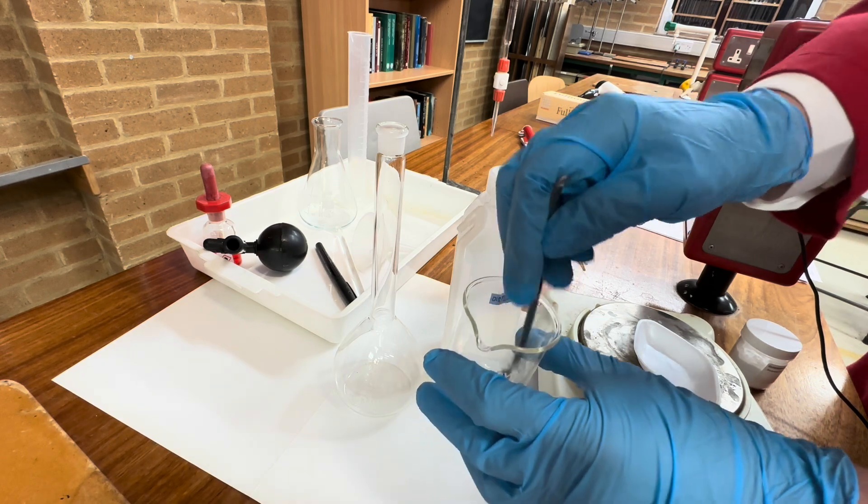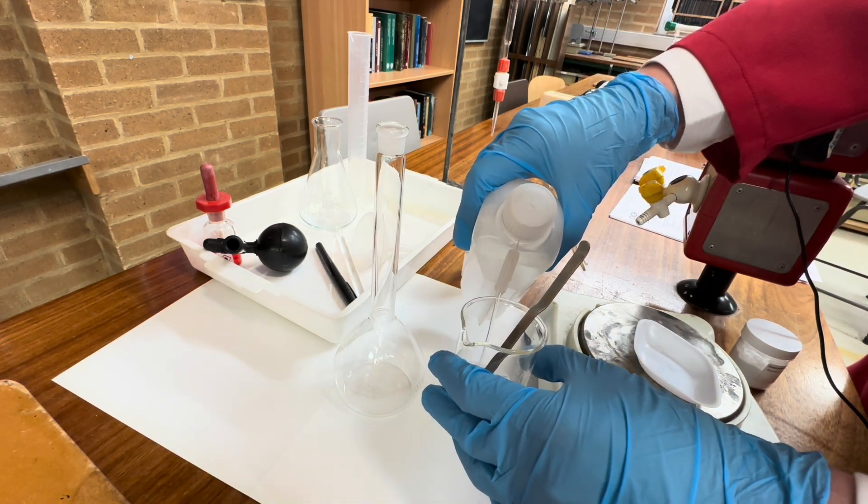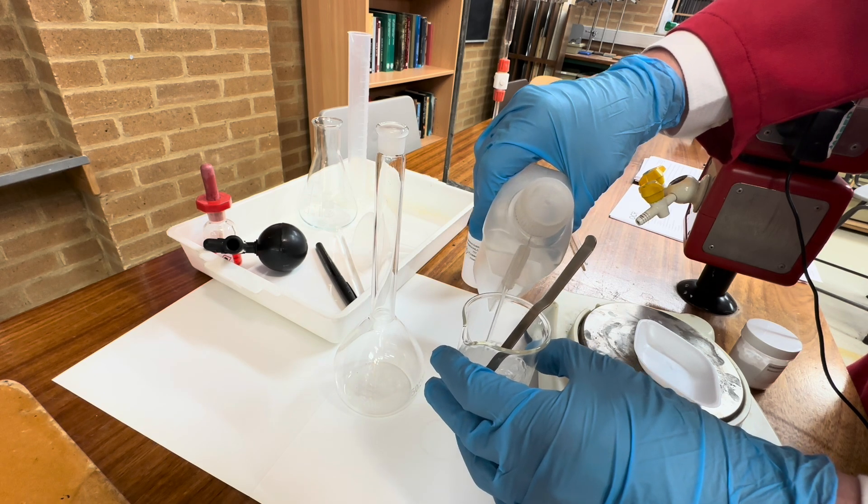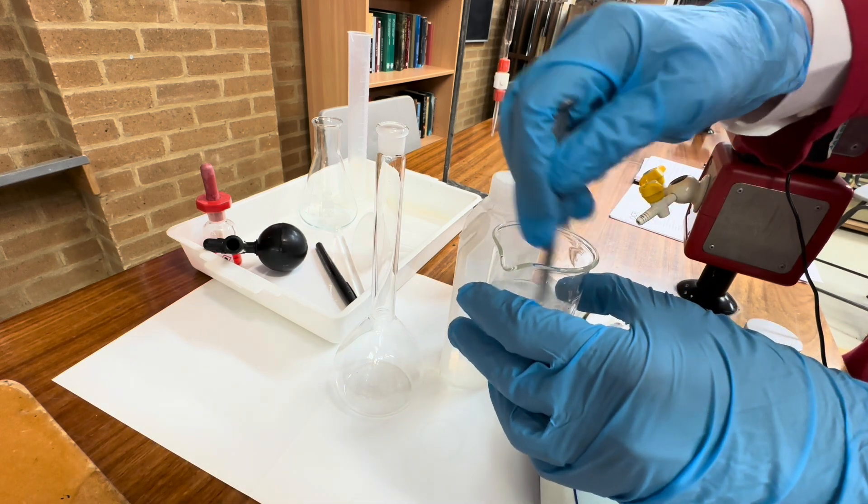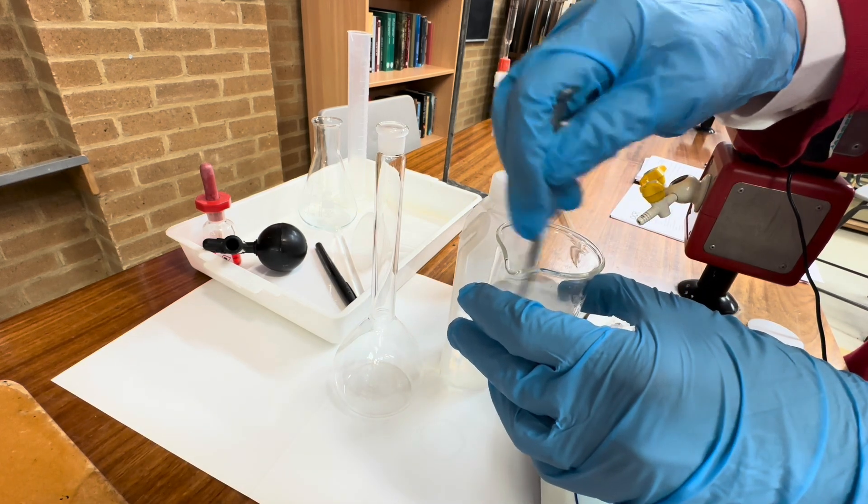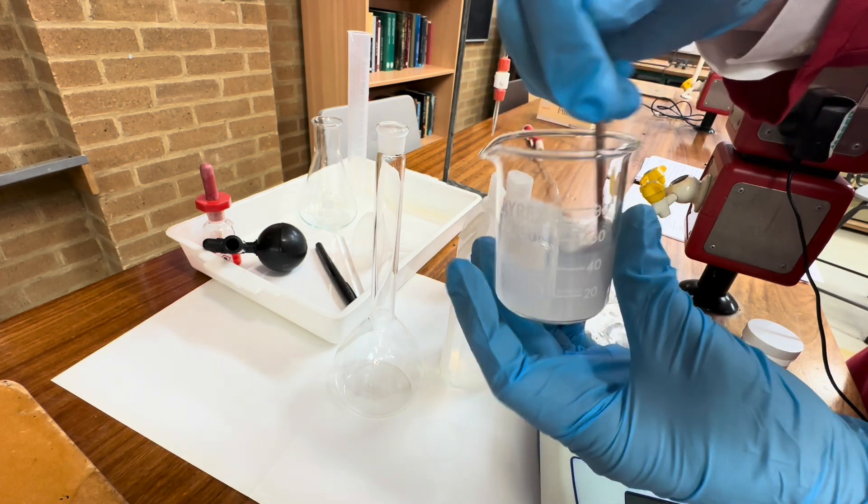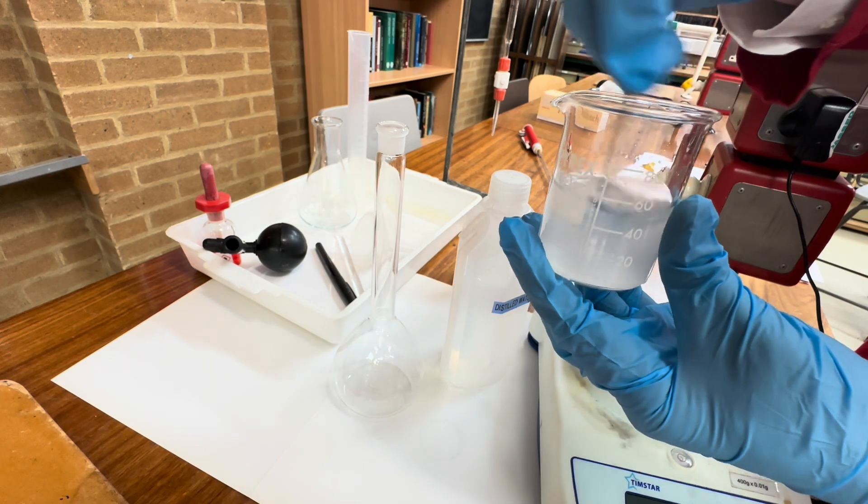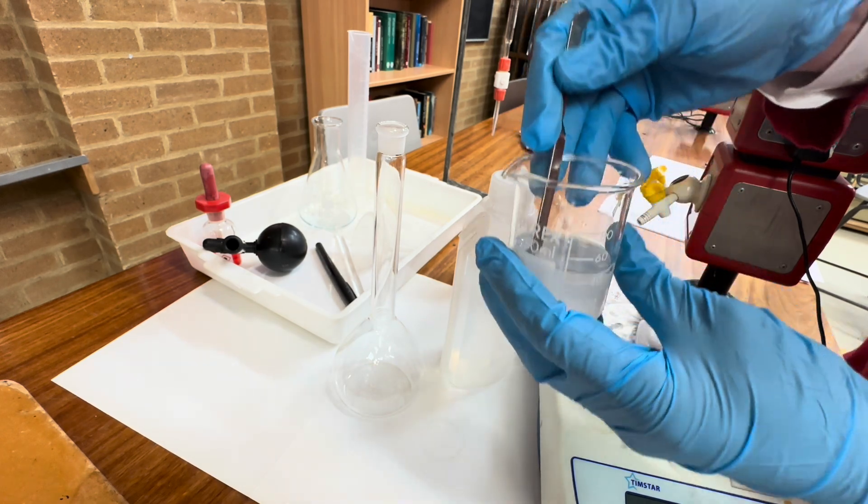Now an important detail is we need to ensure that this is all dissolved before we put it into the volumetric flask. We can add a fairly substantial amount of distilled water to this. As long as we don't go above 250 we'll be okay. Just give it a good stir, break up any large pieces that you can see. That looks dissolved.